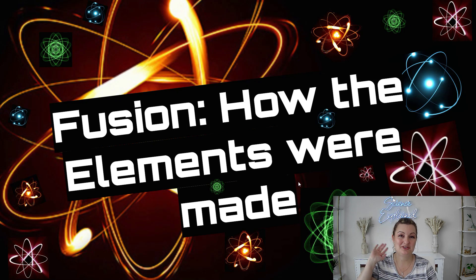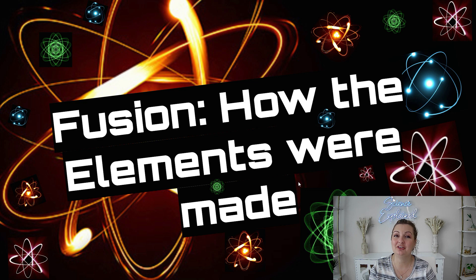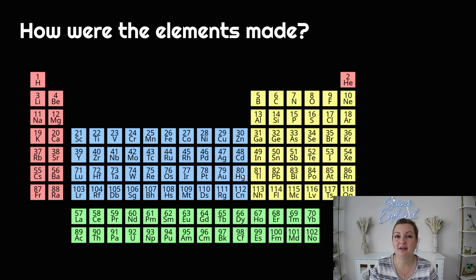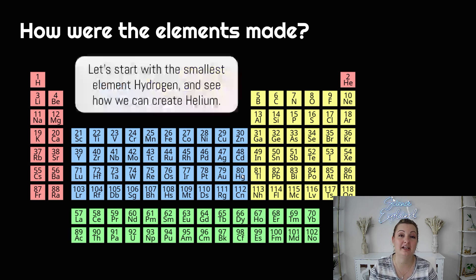Hey everybody, Mrs. Bodishan here. So today we're going to be talking about how the elements were created, particularly with fusion. So if you look at the periodic table, you can see there's a vast array of elements, but how was each one actually created?